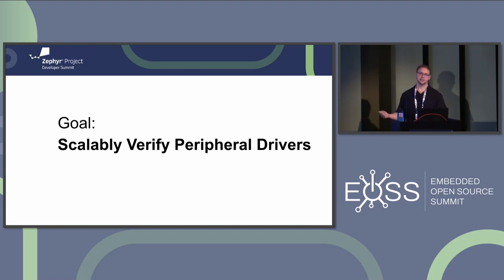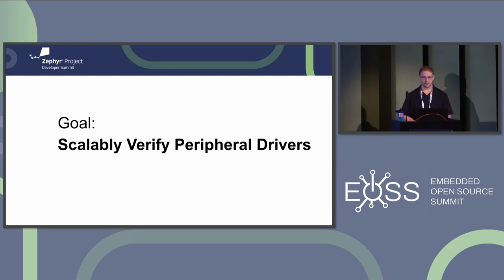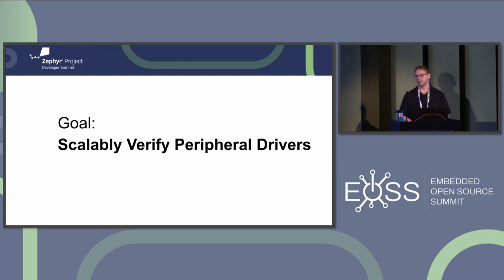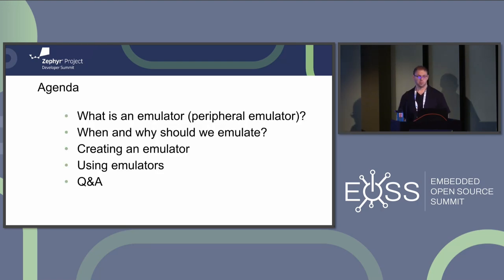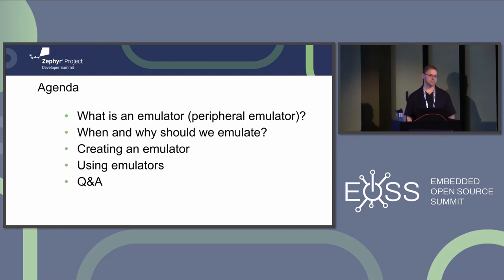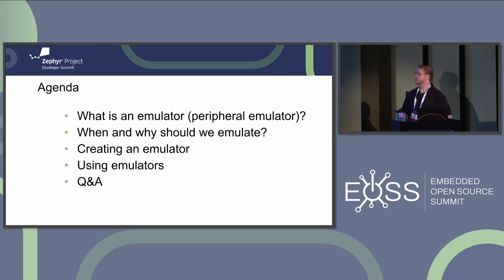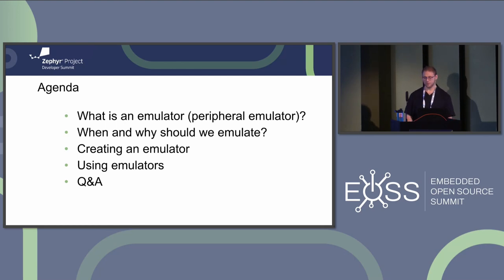We also want to do this scalably, meaning we want it to be cheap and deterministic so we can run in CI. What we'll see later is that we can get really good quality and scalable testing by combining emulated testing with hardware testing. We're going to talk about peripheral emulators, when or why we should emulate, whether it's worth the engineering cost, how to create an emulator, and how to actually use it in a test. Then we'll have final comments and Q&A.